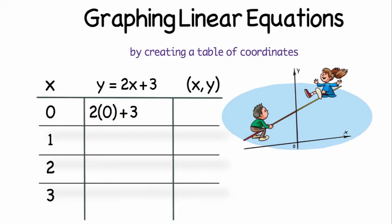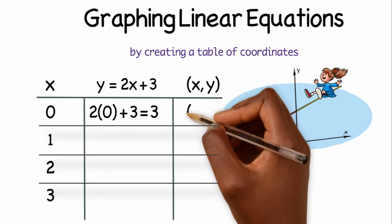2 times 0 is 0, and 0 plus 3 is 3. So the y coordinate that is paired with your x value of 0 will be 3. The first coordinate I'm going to be asked to graph is (0, 3).